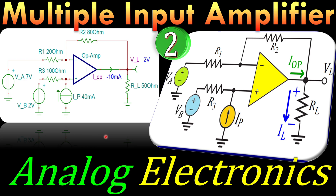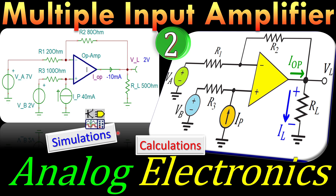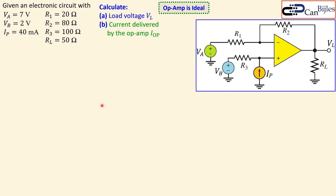Greetings and welcome to a new video about multiple input amplifiers. We continue with circuits using op amps. In this case we will look at a circuit with three inputs and calculate specific voltages and currents step by step. We have three sources: Va = 7 volts, Vb = 2 volts, and Ip = 40 milliamps. We have four resistors R1, R2, R3, and the load RL. We want to find the load voltage VL and the current delivered by the op amp.